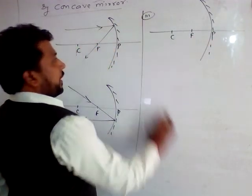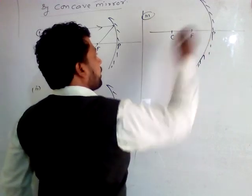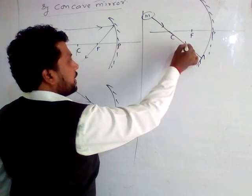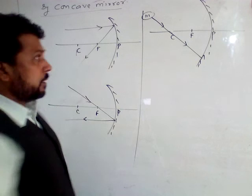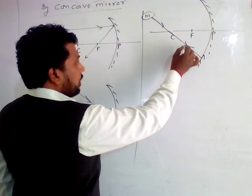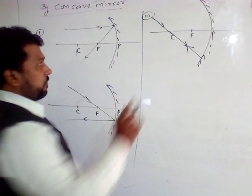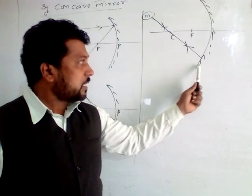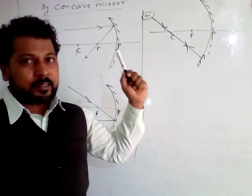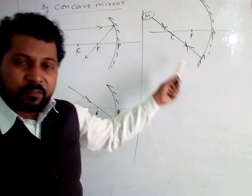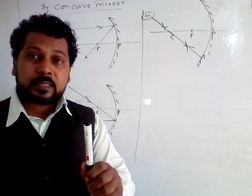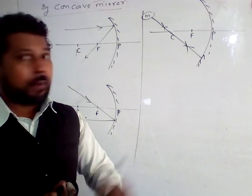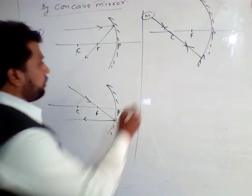When any ray of light passes from C, means the Center of Curvature, then after reflection, it will retrace the same path. When any ray of light passes from C, means Center of Curvature, then after reflection, it will travel back on the same path.